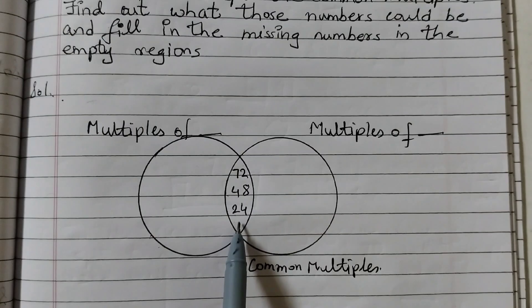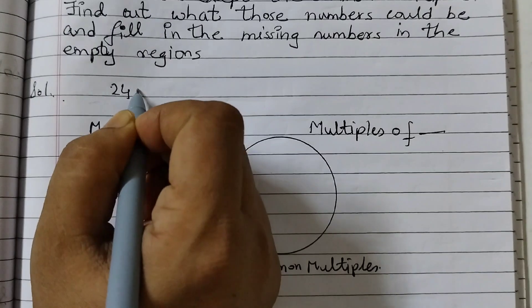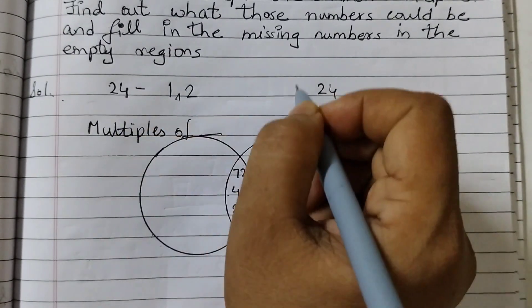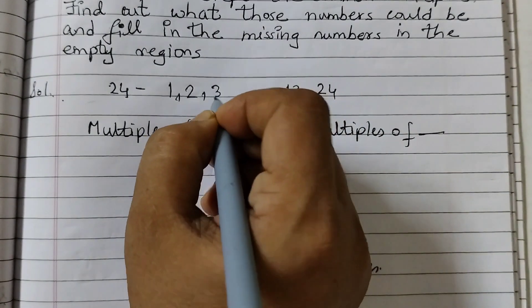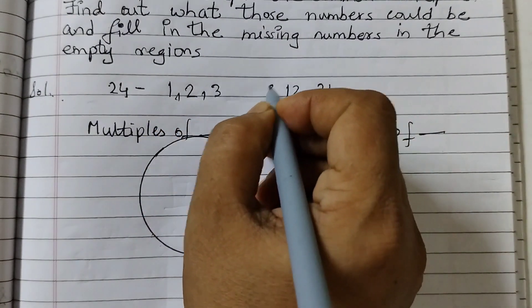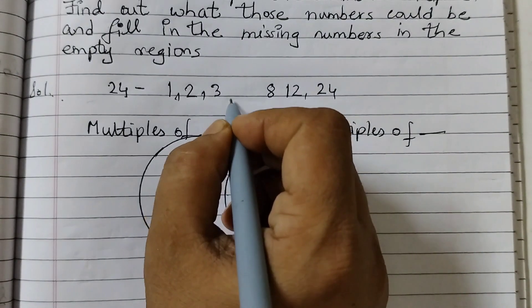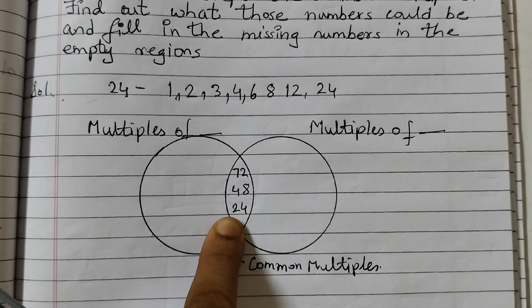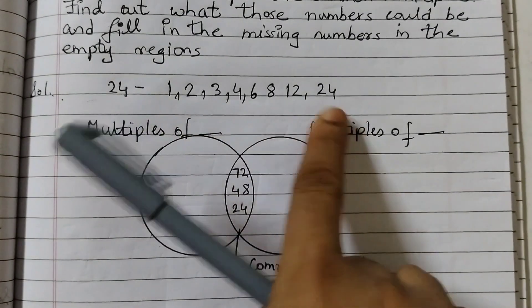If you take the factors of 24: 1 into 24, then 2 into 12, 3 into 8 is 24, 4 into 6, 6 fours are 24. First step, what I have done is I have taken the smallest number, smallest common multiple, and written the factors of that.